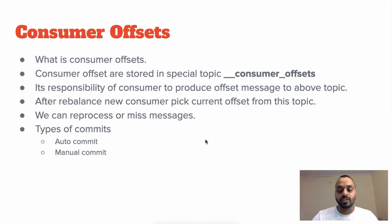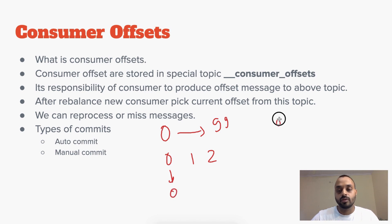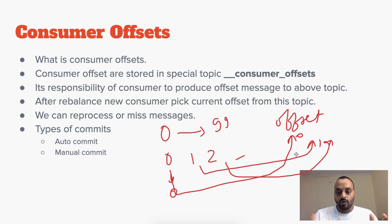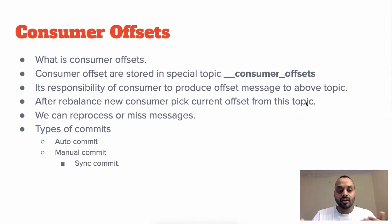To take full control, we can commit the offset for each message as we process it. Let's say we polled messages 0 to 99 — as we process message 0 we update the offset to 0, then offset 1, offset 2, and so on. There will be a large number of requests to the offset topic, but we will not have the problem of reprocessing or missed messages.